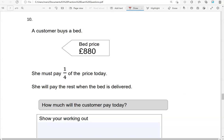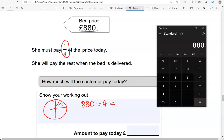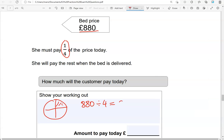A customer buys a bed, bed price 880 pounds. She must pay a quarter of the price today. She will pay the rest when the bed is delivered. How much will the customer pay today? So it's a quarter of the price. So we're going to divide the whole price by 4. So 880 divided by 4, which is 220 pounds.